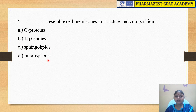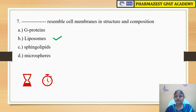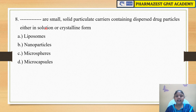The next question is: dash resembles cell membranes in structure and composition. The options are A) G proteins, B) liposomes, C) sphingolipids, and D) microspheres. This is a dosage form which resembles cell membranes. The answer is liposomes.